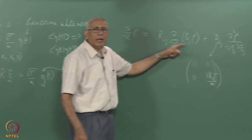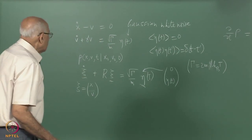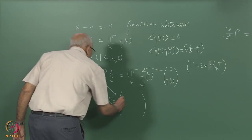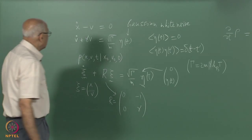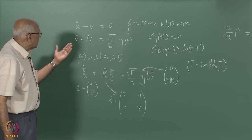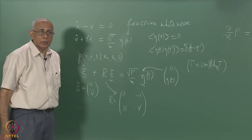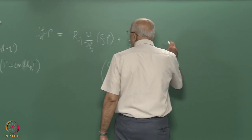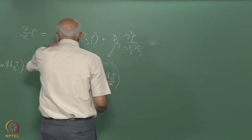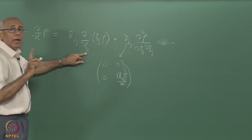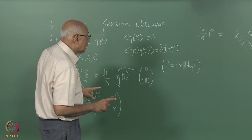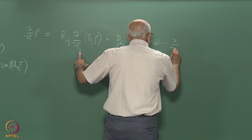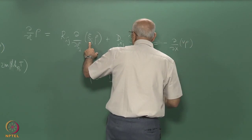There is a summation over repeated indices; i and j run over 1 and 2. In this problem, R equals the matrix (0, -1; 0, gamma): R_12 = -1, R_21 = 0, R_22 = gamma. Writing out the Fokker-Planck equation explicitly, we get d rho/dt = minus (d/dx)(v rho), from the R_12 term with i=1, xi_2 = v.